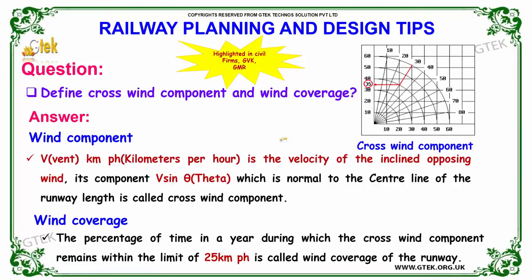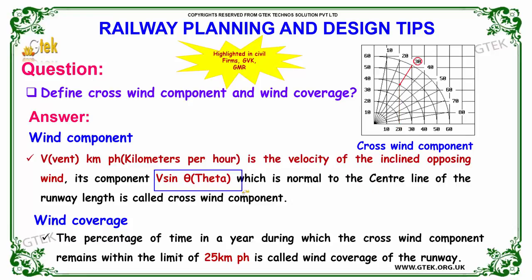The next question: define crosswind component and wind coverage. If V is the velocity of the inclined opposing wind in km/h, then V sine theta — normal to the centerline of the runway — is called the crosswind component. Wind coverage is the percentage of time in a year during which the crosswind component remains within the limit of 25 km/h, and this is called the wind coverage of the runway.